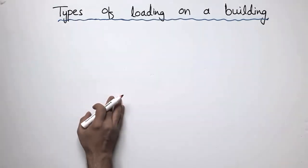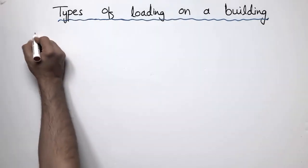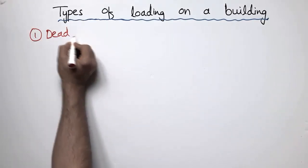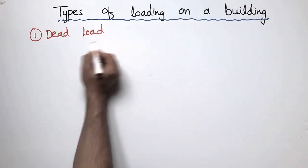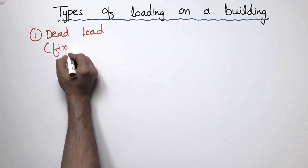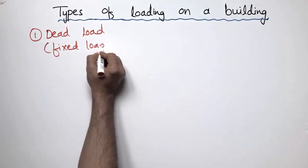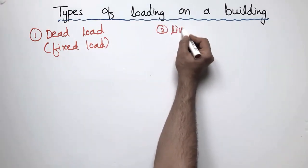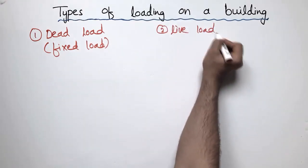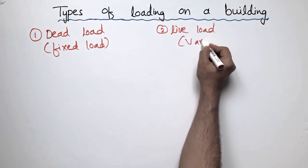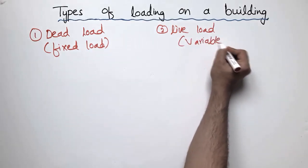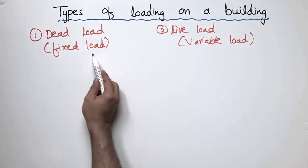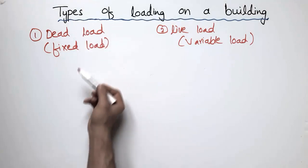First of all, we will discuss the two important types of loading. The first important type is the dead load, also called the fixed load, and the second one is the live load, which is also called the variable load. The dead load or fixed load is a type of loading which is fixed with the location.